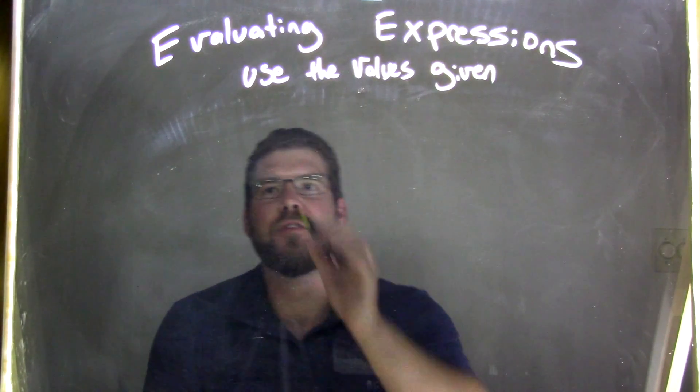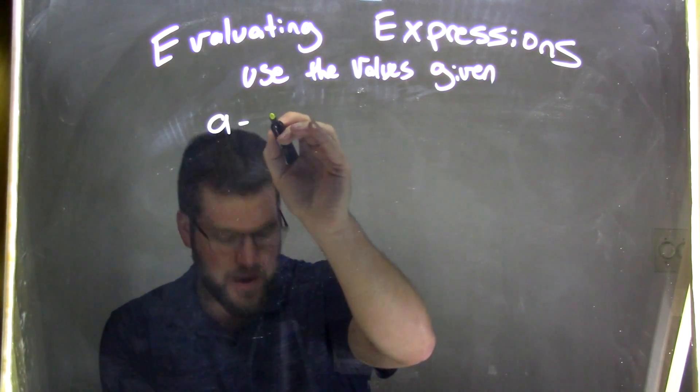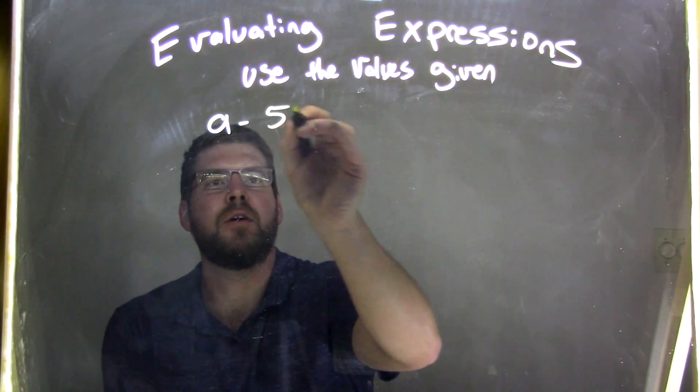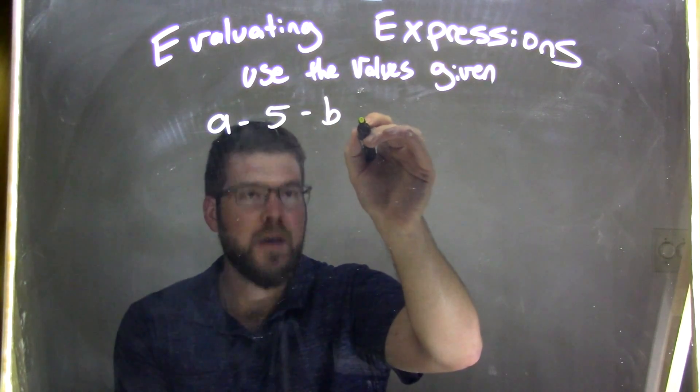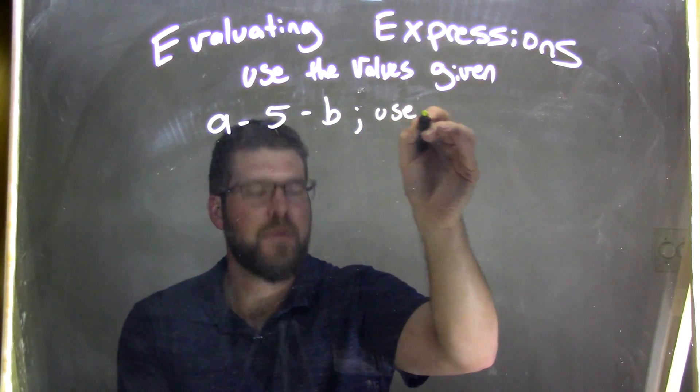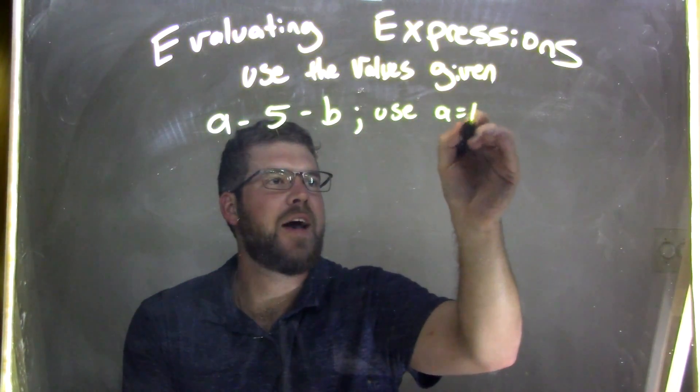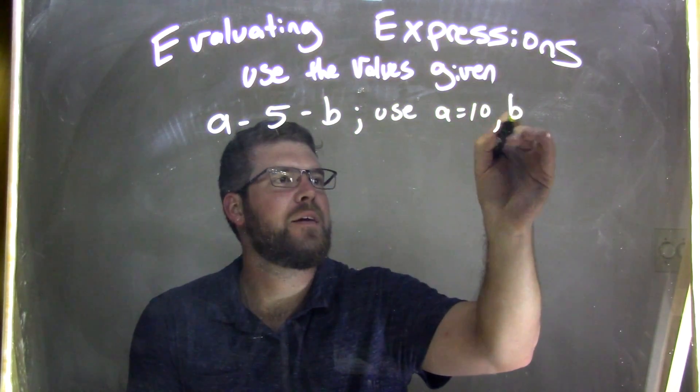So if I was given this expression, A minus 5 minus B, and I need to use A to be 10 and B equal to 4.